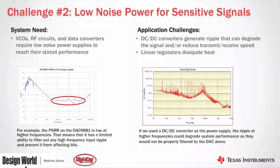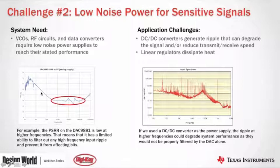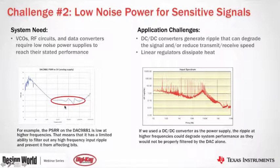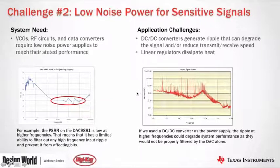The last communications challenge is designing for low noise environments — systems with RF circuits, VCOs, data converters, and other sensitive signals. The power supply rejection ratio (PSRR) chart of a DAC shows that while it has very good rejection at low frequencies, switching noise from a power supply intrudes at higher frequencies where the DAC's PSRR is quite low, limiting its ability to filter out that switching noise. A wide-band spectrum also shows significant power supply noise that can interfere with RF signals.